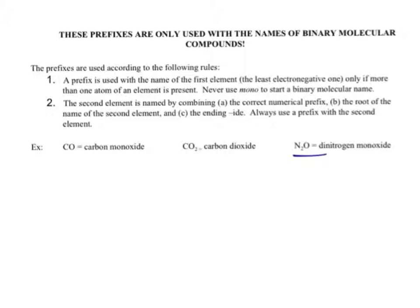These prefixes are only used with the name of binary molecular compounds. The prefixes are used according to the following rules. Step one: a prefix is used with the name of the first element only if more than one atom of that element is present. Never use 'mono' to start a binary molecule.